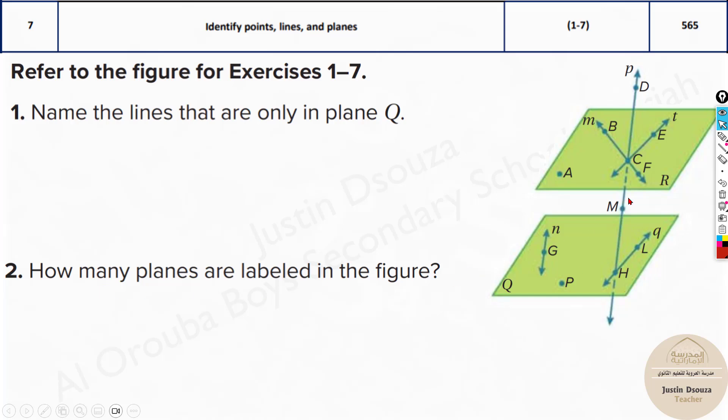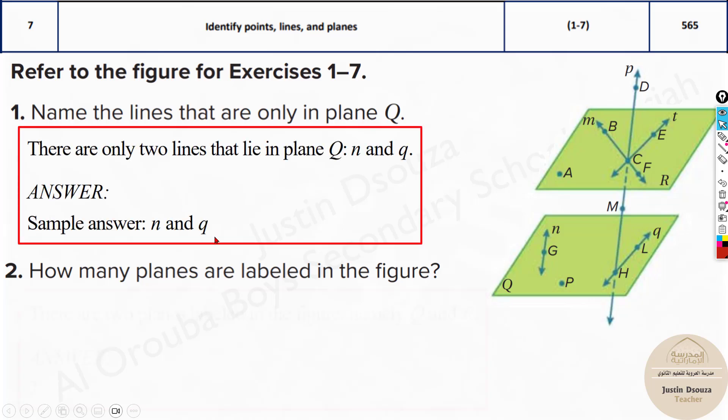How many planes are labeled over here? There are two planes, right? R and Q. Those are the answers.